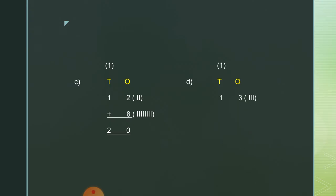If we have to add thirteen with seven, we first add the ones position. There we have three and seven. We draw three lines in front of three and seven lines in front of seven. When we add seven and three we get: seven, eight, nine, ten — we get ten. We put zero at the ones position and carry one to the tens position. Adding one from thirteen with the carried one, the answer is twenty.